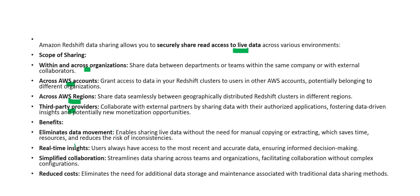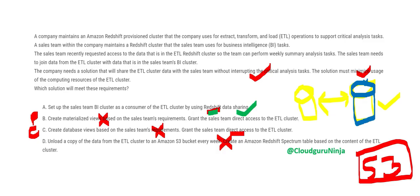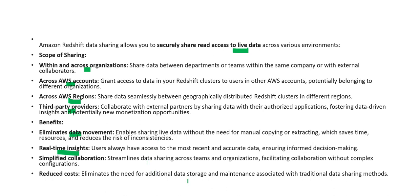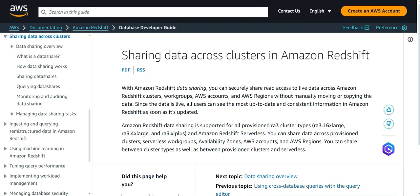Redshift manages internal compute and so on on its own — it's a managed service. First, you are not doing data movement, because data movement is the most expensive operation: it uses compute, uses storage, and you duplicate data so you pay for storage too. Plus, this gives you real-time insights — whatever is in the blue box, the yellow box can access it immediately. This reduces storage cost, and there is no maintenance like traditional data sharing methods. This is shown in the Redshift sharing documentation.